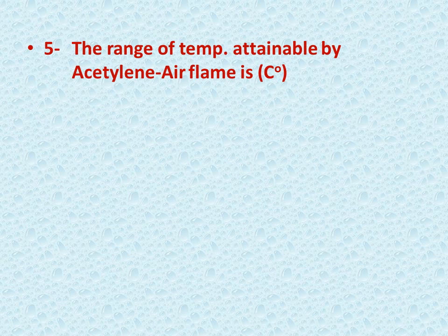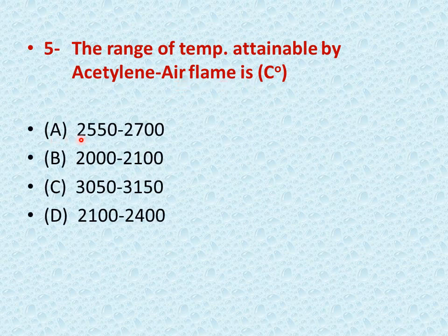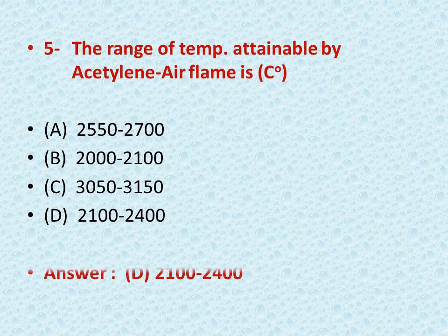Question number five: the range of temperature attainable by an acetylene-air flame is — options: A is 2550 to 2700°C, B is 2000 to 2100°C, C is 3050 to 3150°C, D is 2100 to 2400°C. The right answer is D — by using an air-acetylene flame, we can get a temperature in the range of 2100 to 2400 degrees centigrade.